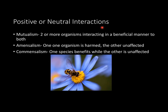Now let's look at positive or neutral interactions. Mutualism is basically when two or more organisms interact in a manner that is beneficial to both — for example, a bee pollinating a plant benefits both the bee and the plant. Amensalism is when one organism is harmed while the other is unaffected, compared to commensalism, which is one species benefiting while the other remains unaffected.